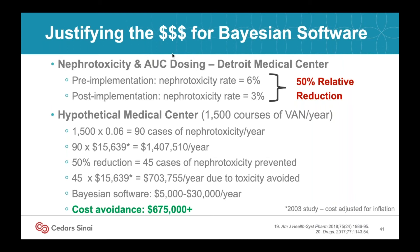In this hypothetical medical center, which provides 1,500 courses of vancomycin per year, we see approximately 45 cases of nephrotoxicity avoided, resulting in excess of $600,000 in cost avoidance after factoring in the cost of Bayesian software. Even if this calculation were a two-fold overestimate, substantial cost avoidance still exists.